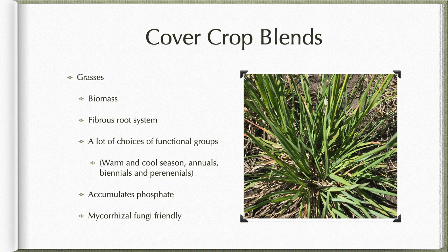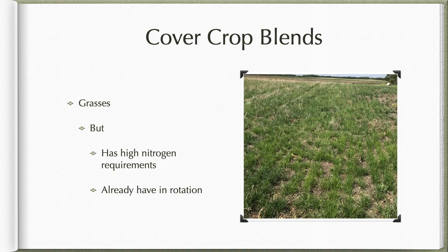With our grasses, this is what produces our biomass. They typically have a nice big fibrous root system. We have lots of choices across warm-season, cool-season, annual, biennial, and perennial types. One of the important things grasses do in plant ecology is accumulate phosphate. Most grasses are quite mycorrhizal-friendly — the warm-season species especially, and oats. A couple of hiccups: grasses have a high nitrogen requirement, and we tend to already have quite a few grasses in our rotation, so we may not add much diversity there.